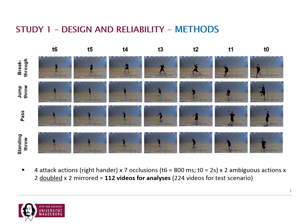We also included ambiguous attack actions to avoid expectation effects in participants. We doubled all video clips for reliability analysis and mirrored them to obtain a left-hander version. The main experiment consisted of 224 video sequences, and our analysis used only 112 video sequences.